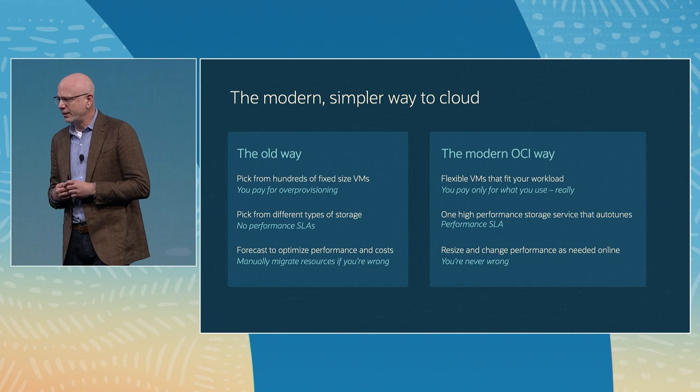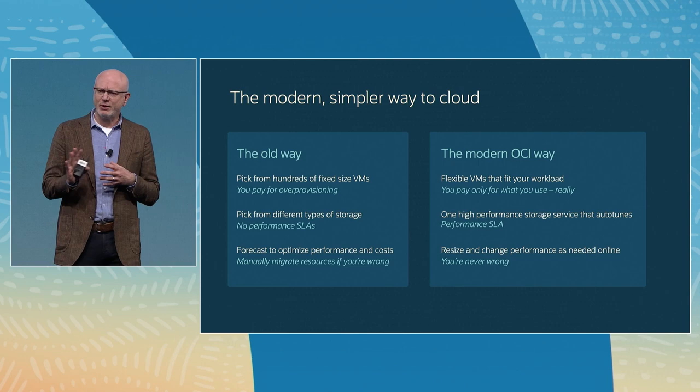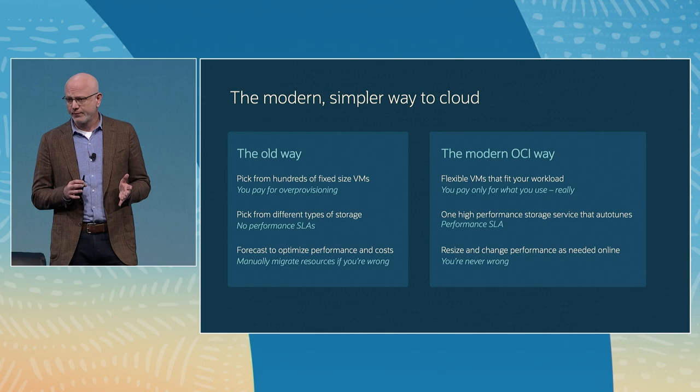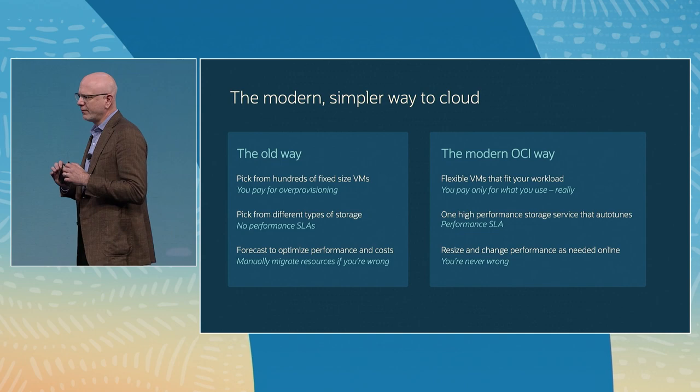They're choosing among a huge number of permutations of available options in terms of compute shapes and storage — it's way too hard. At OCI we're really trying to engineer a better and simpler way to manage cloud infrastructure. We have the concept of flexible VMs that you can tailor dynamically to your needs, and we've done similar work with the storage tier. Generally, we're trying to follow a theme OCI has had from the start: to make the cloud more autonomous for your workloads.